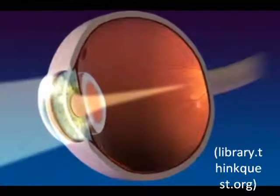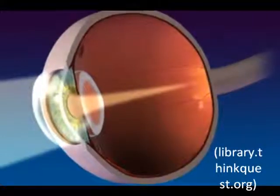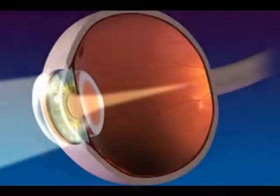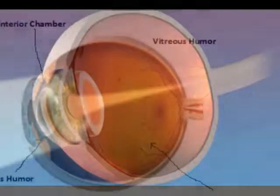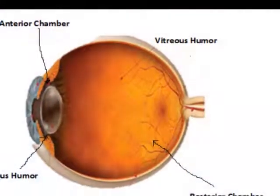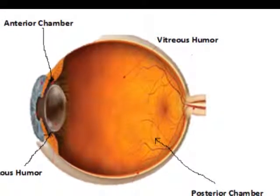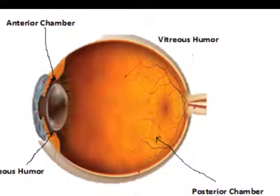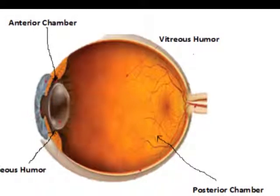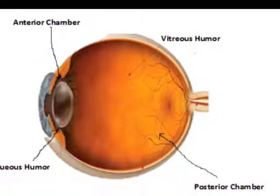The lens is a transparent, flexible, biconvex structure that bends or refracts light rays so that they can focus on the nerve cells of the retina. The chambers are filled with a watery fluid that helps reflect light rays as well as give shape to the eye.